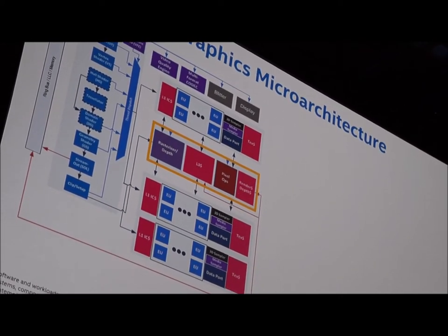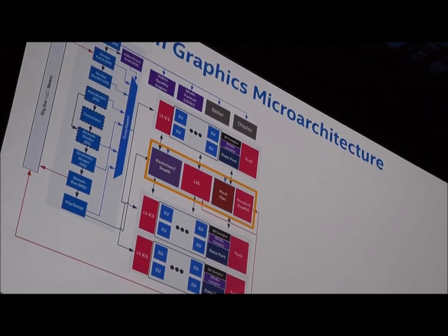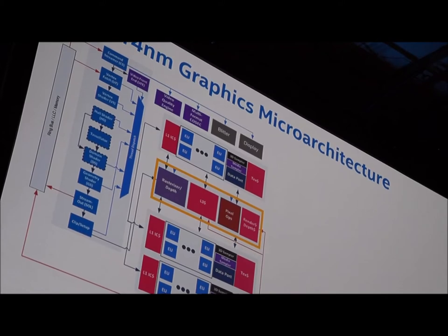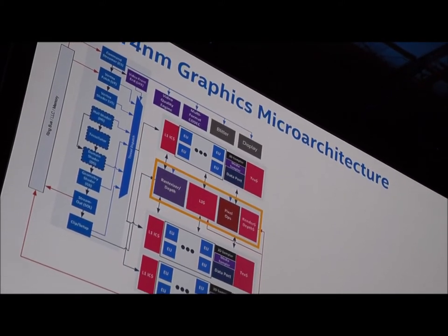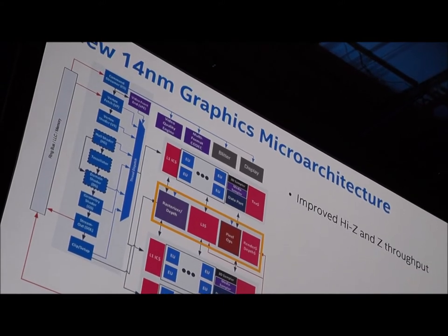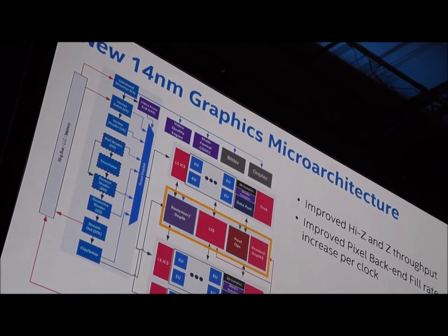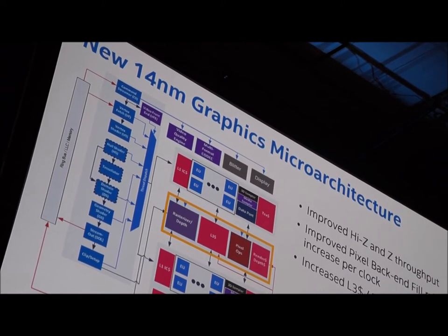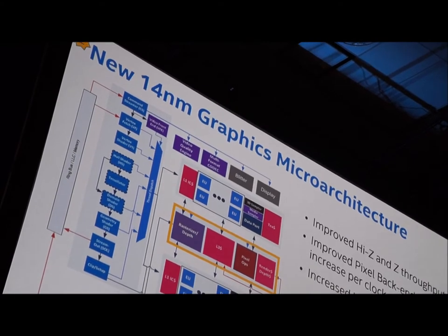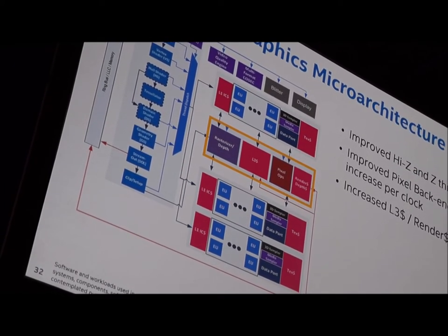The slice common contains the rasterizer, Hi-Z and Z units, stencil, pixel ops / ROP engines, and the shared entry cache housing shared local memory. On the slice common, Hi-Z and Z throughput has been improved; the pixel backend fill rate increased by 50% and blend rate by 100%. All caches in slice common were increased: the L3 shared texture cache, depth cache, and render caches. In a GT3 configuration with two slices, all of the above effectively doubles.